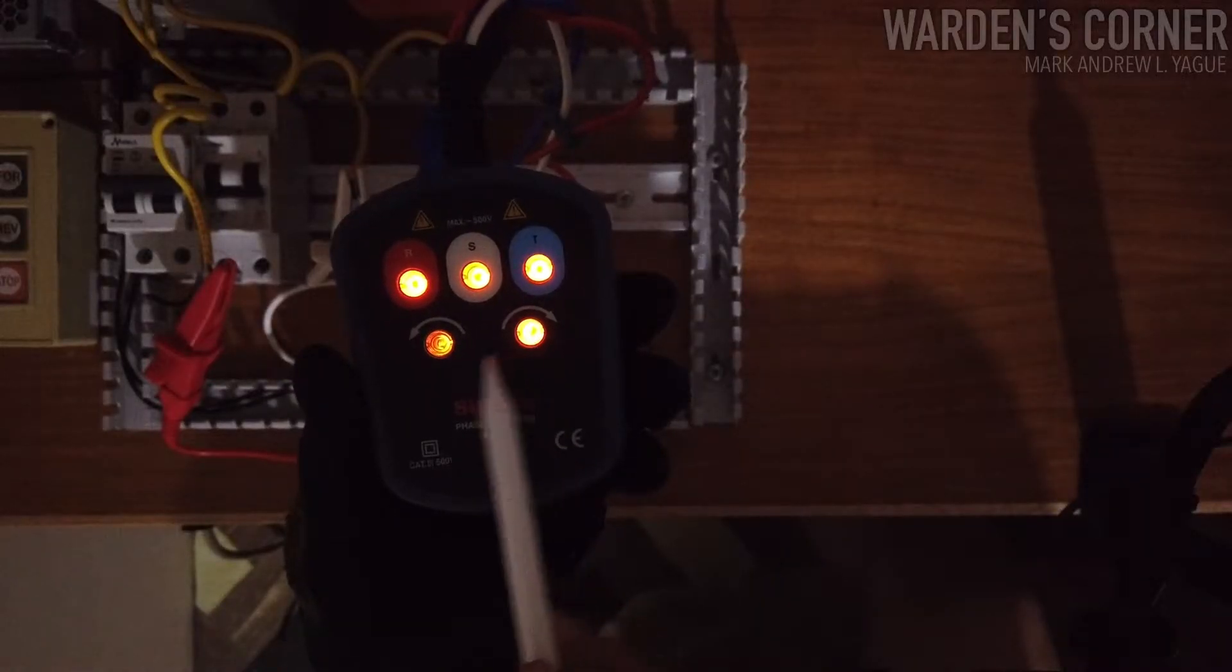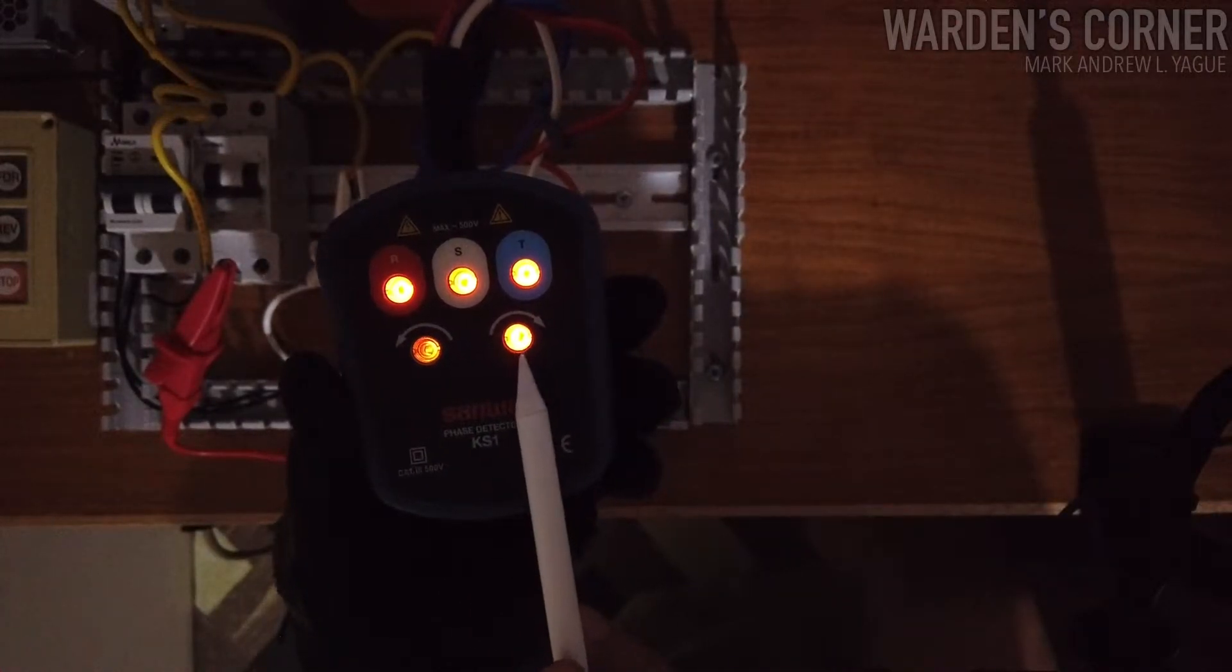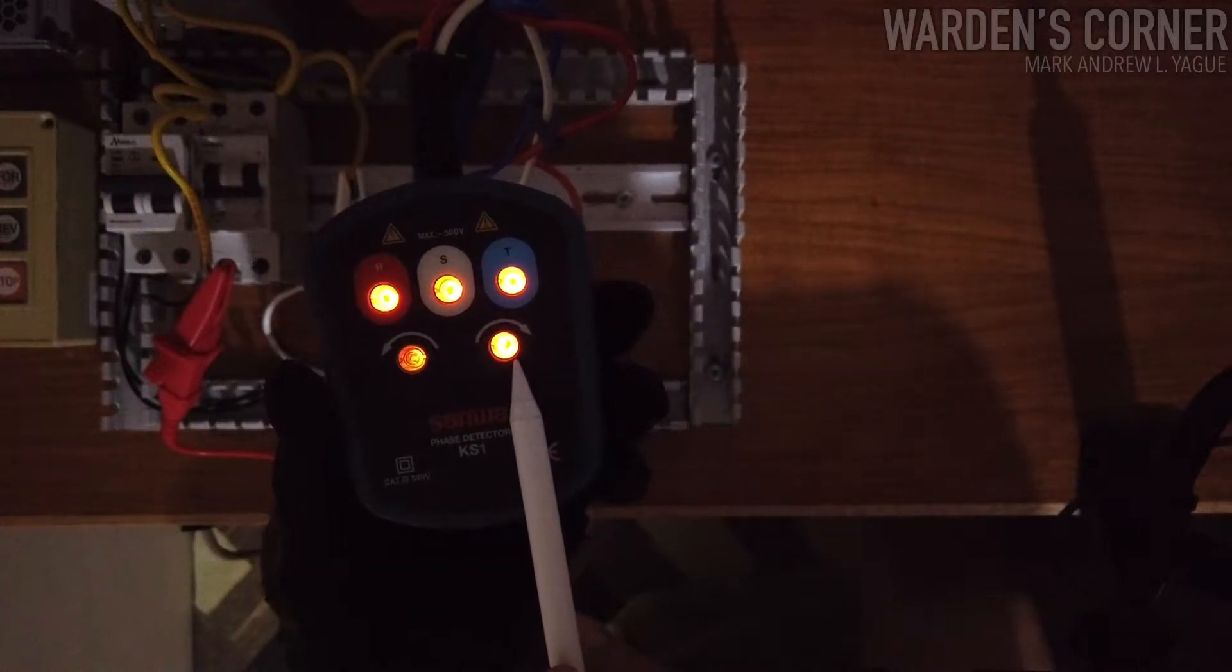This shows that our indicator is on, and indicator is off. The phase rotation indicator shows the line supply is in clockwise or forward direction.